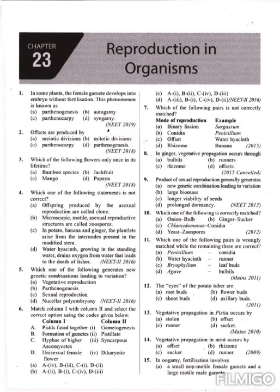Question number 10: which one of the following is correctly matched? The options include onion-bulb, ginger-sucker, tomato-runner, conidia-yeast, and zoospore. The examples suitable for each type of vegetative propagation are very important. In the case of onion, the type of vegetative propagation is bulb. So question number 10, the correct option is A.